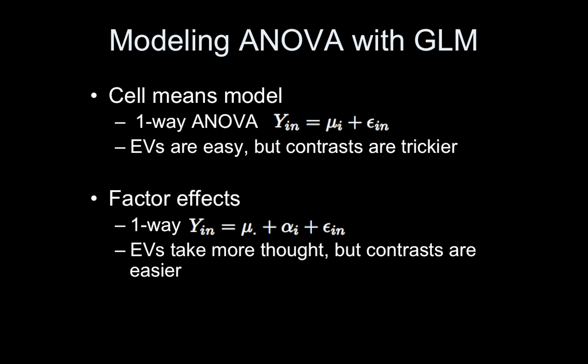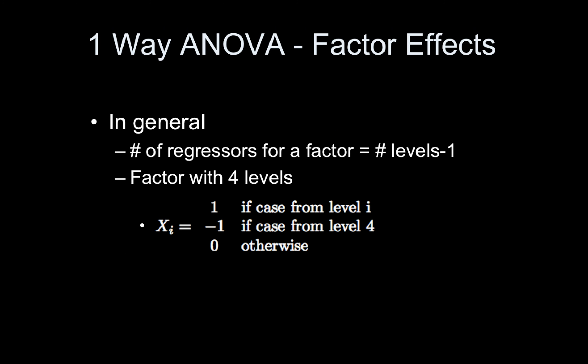I'm going to give you a set of steps that you simply follow. If you follow those steps every time you set up your regression, you'll be fine. In general, you always start with a column of ones — I'm glossing over that and focusing on the rest of the regressors. After your column of ones, the remaining number of regressors equals the number of levels in your factor minus one. The example I'm using today has four levels, so I will need three regressors.